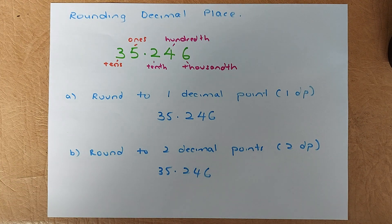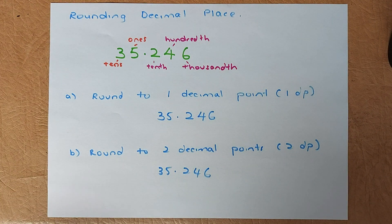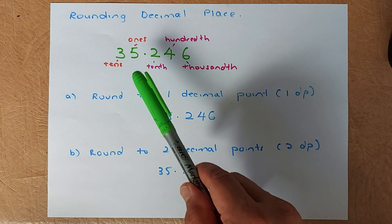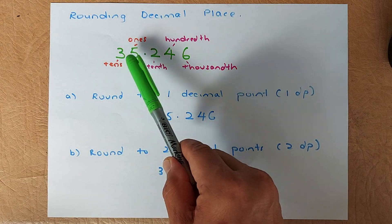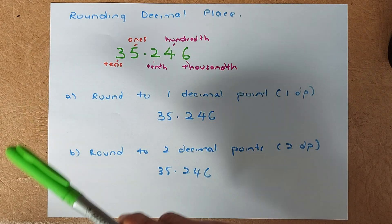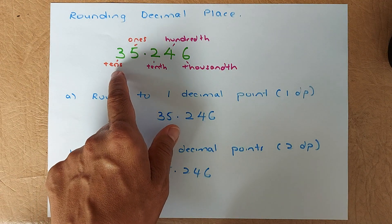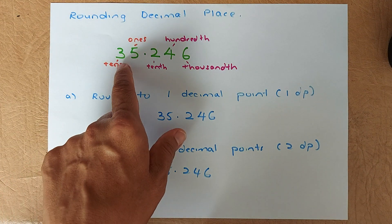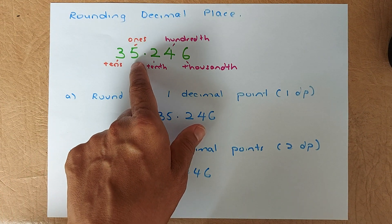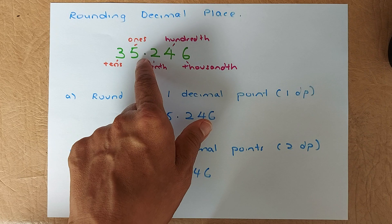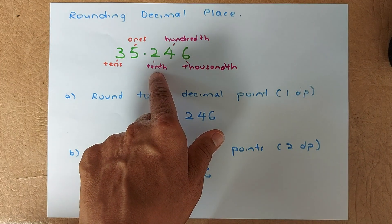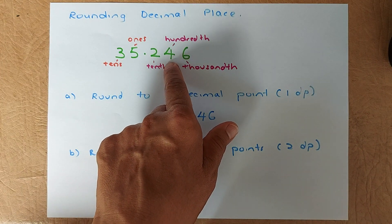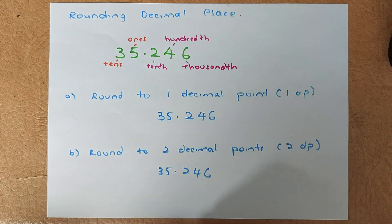Today we are going to look at something called rounding. The decimal point is here, and there are numbers on the left and on the right of the decimal point. The first number after the decimal point is called the tenths place, followed by the hundredths place, and last but not least, the thousandths place. In the exam, they may ask you to write this in words.